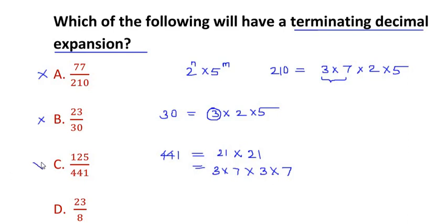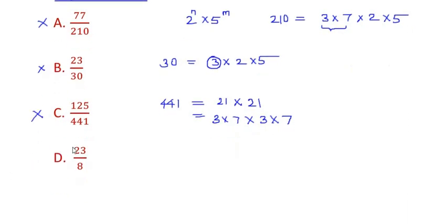That's why this is also a wrong option. So automatically it becomes option D, which is the right answer. But let us just find out how D becomes the answer. Now if we look at the denominator, it is written as 8.